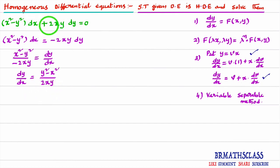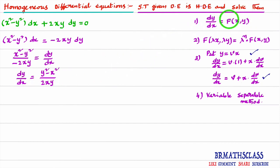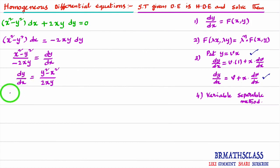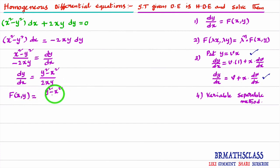I have written the given differential equation in the form dy/dx = f(x, y). Now, what is f(x, y)? It is a function in terms of x and y. So, f(x, y) = (y² − x²) / (2xy).